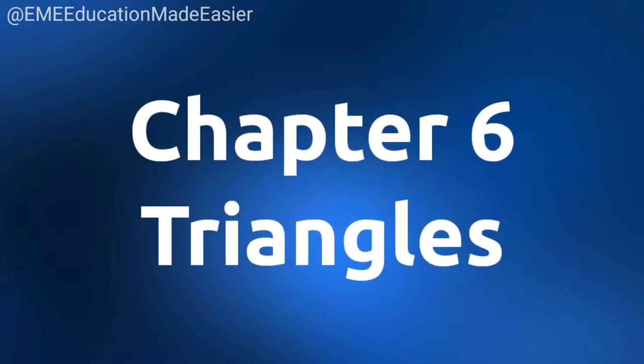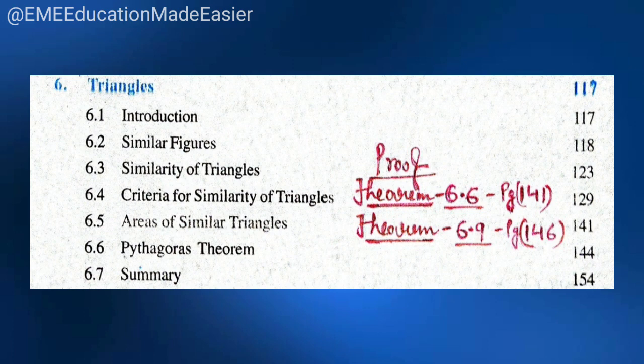Coming to Triangles — this chapter is considered to be a very, very important chapter. The good news for you is that theorem 6.6, on page number 141, and theorem 6.9, which is the Converse of the Pythagoras theorem on page 146, they are not coming.